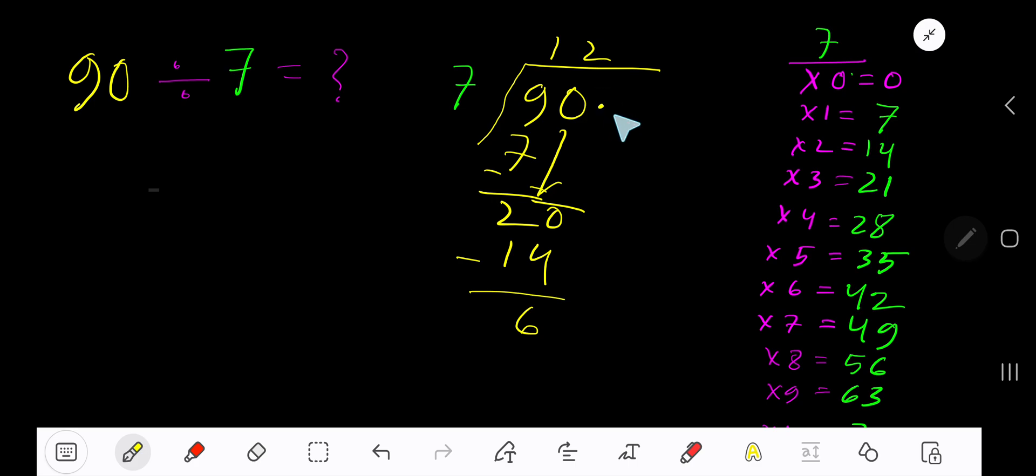So our answer is 12 remainder 6. If you want to write your answer in decimal form, then take a decimal and add number of zeros, converting this whole number into decimal number. Bring down the first zero. Before the zero there is a decimal, the decimal must come to the quotient directly.